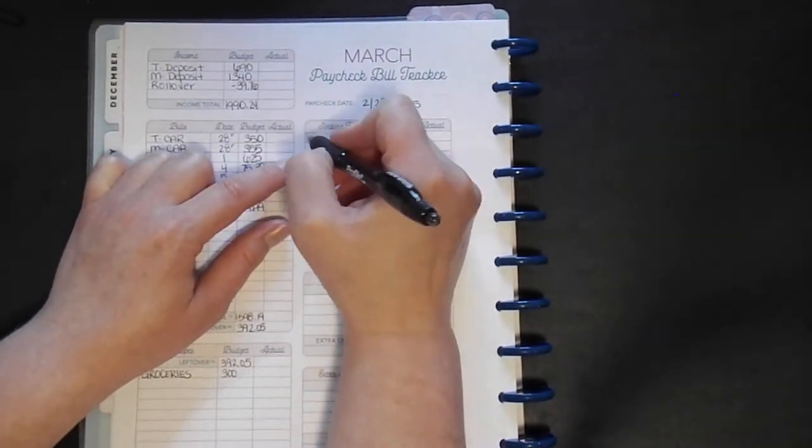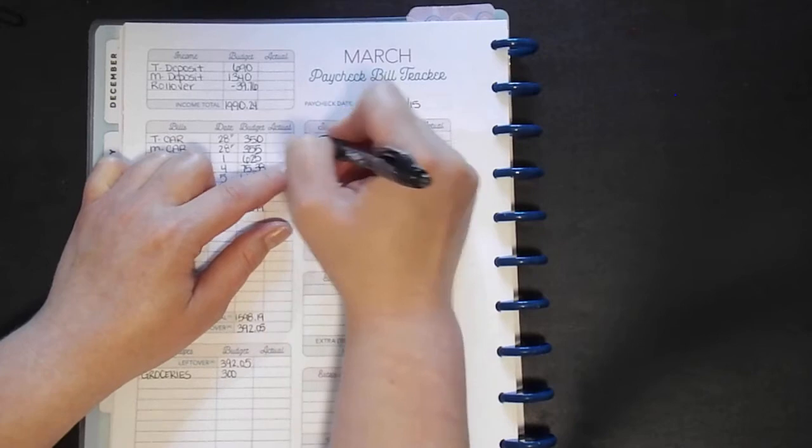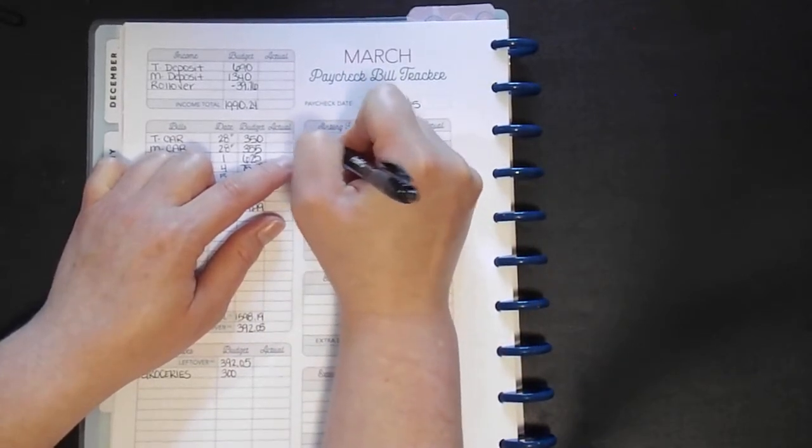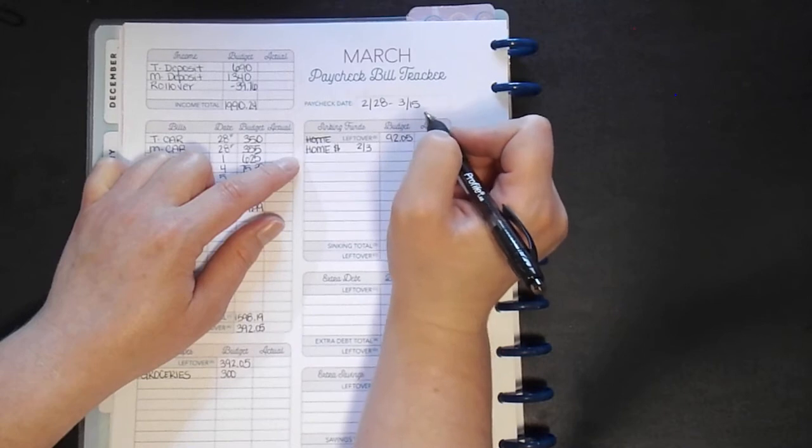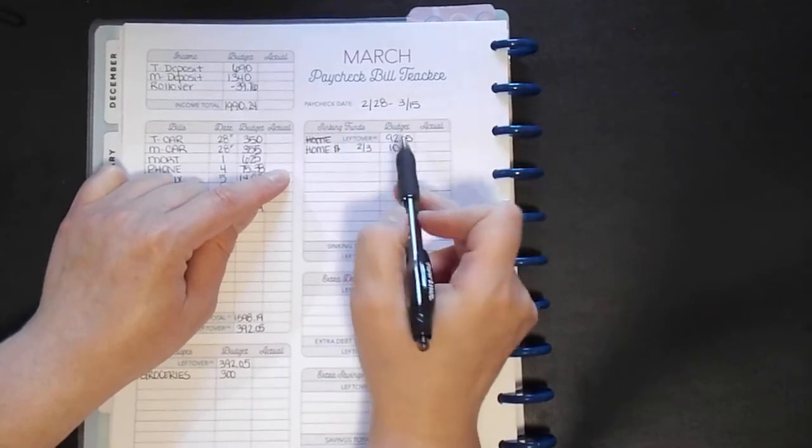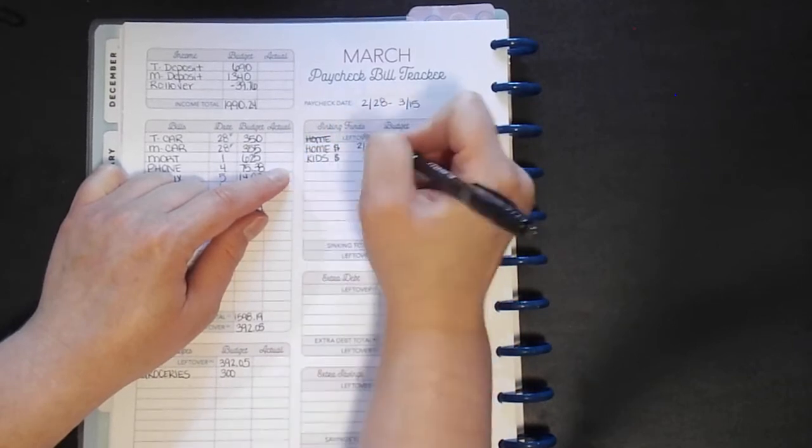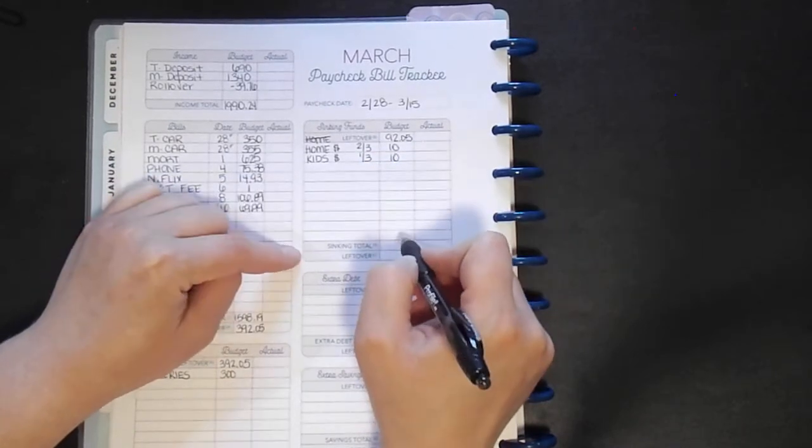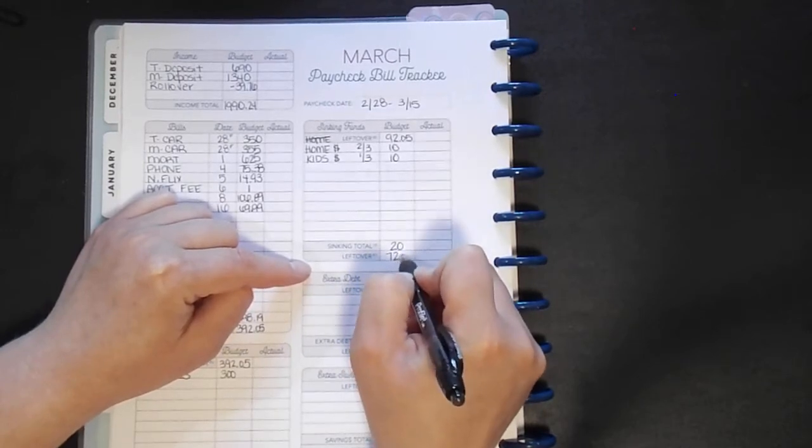So I really want to stick to this just to get started back up. I wrote that on the wrong line, I'll move that down here and I'll white it out later. Home money usually is two-thirds of whatever rollover we had, but we were negative. So I'm just going to say $10 because we do have some leftover money here. And then for the kids is usually a third of our rollover from our checking account, but we're just going to do $10 just to start to have it back up. And then our leftover will be $72.05.